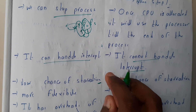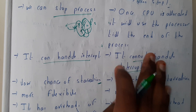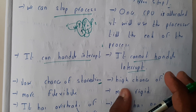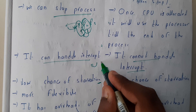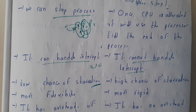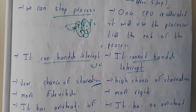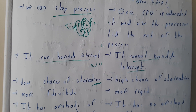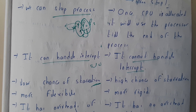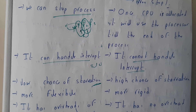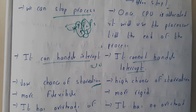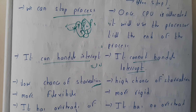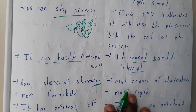In preemptive scheduling, there is a chance of less starvation compared to non-preemptive. Non-preemptive gives chances to high-priority processes that come in, which is why starvation is less in preemptive. Starvation is nothing but a process waiting for resources for a long time — initially counted as waiting time, and after a long time it becomes starvation.